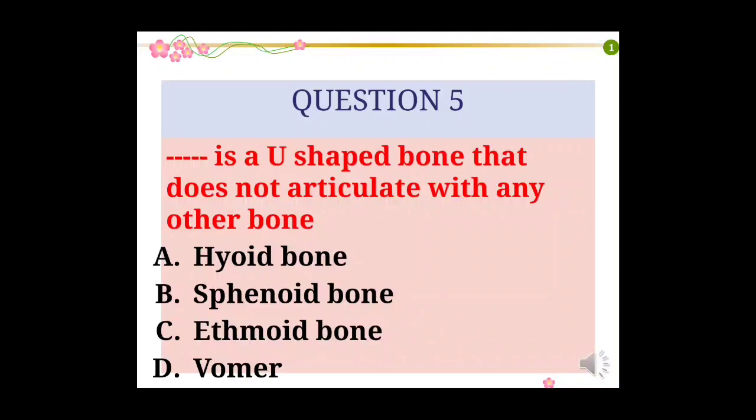Question number 5: Dash is a U-shaped bone that does not articulate with any other bone. Options: Hyoid bone, Sphenoid bone, Ethmoid bone, Vomer.